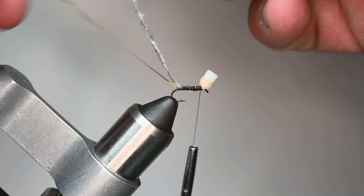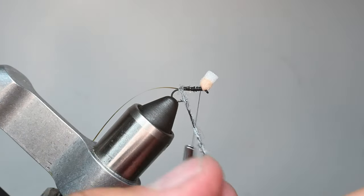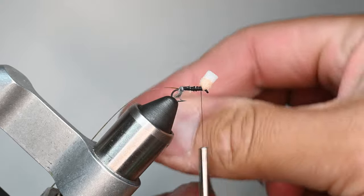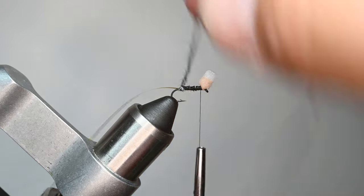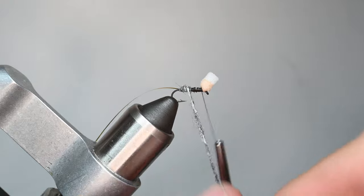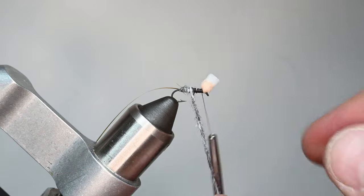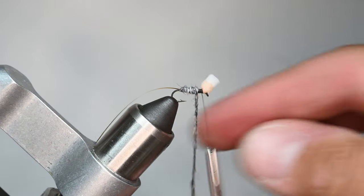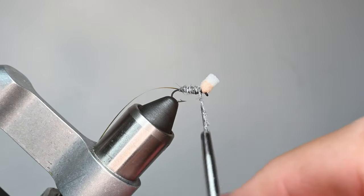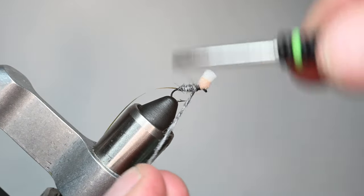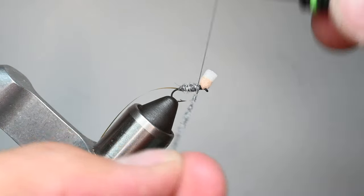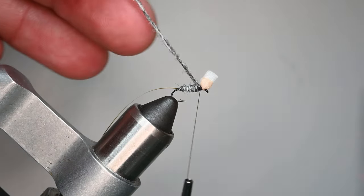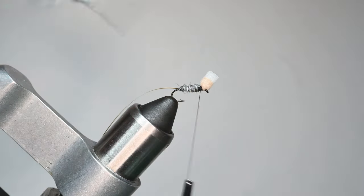I'll take my floating poly yarn now and just give it a little bit of a tight wrap here on the first wrap just to help minimize the bulk back there. Then I'll just palmer this up with touching wraps. This stuff—look at that—that's just awesome body material. You'll notice I'm not going to do an extra wrap like you would think. I want to leave a little bit of room here and I don't want to crowd it, which is what I found to be a trick so that we can get our hackle on there pretty easy.